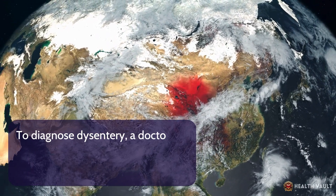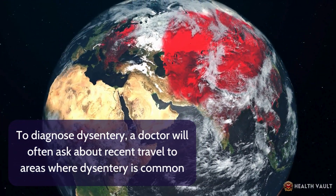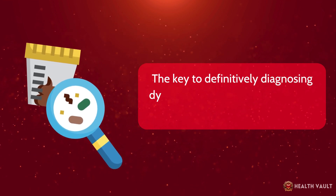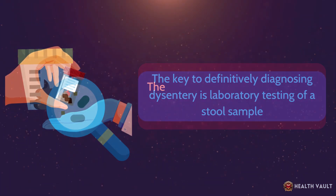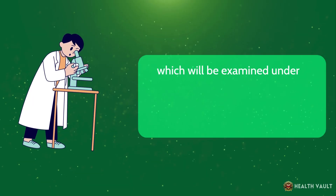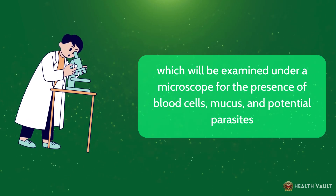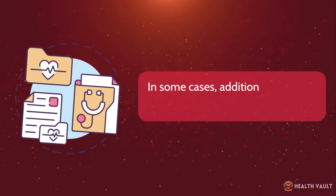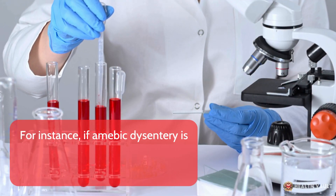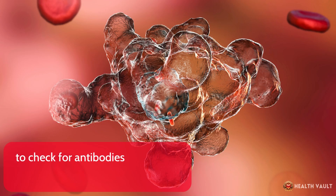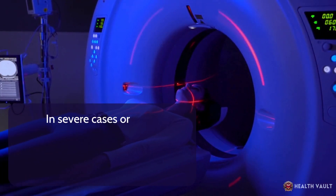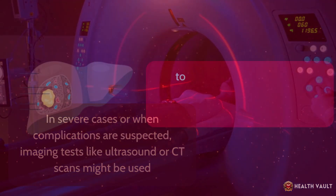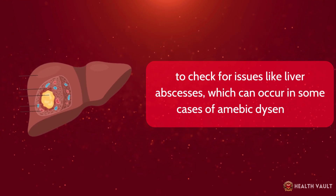To diagnose dysentery, a doctor will often ask about recent travel to areas where dysentery is common, as well as any possible exposure to contaminated food or water. The key to definitively diagnosing dysentery is laboratory testing of a stool sample, which will be examined under a microscope for the presence of blood cells, mucus, and potential parasites, and also cultured to identify any bacterial pathogens. If amoebic dysentery is suspected, a blood test might be ordered to check for antibodies against Entamoeba histolytica. In severe cases, imaging tests like ultrasound or CT scans might be used to check for issues like liver abscesses.